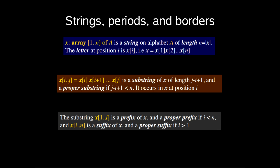x i up to j is x i, x i plus 1 up to j, which is a substring of x of length j minus i plus 1, and a proper substring if j minus i plus 1 is less than n, meaning less than the length of the entire string. It occurs in x at position i.